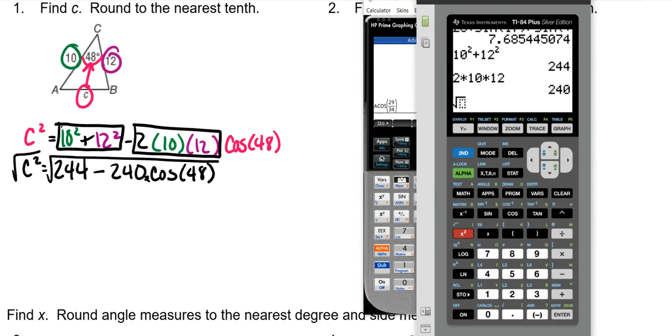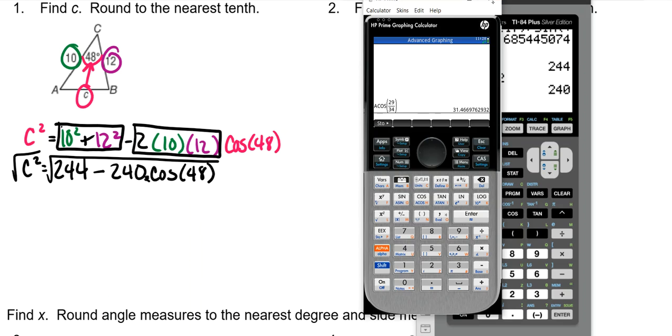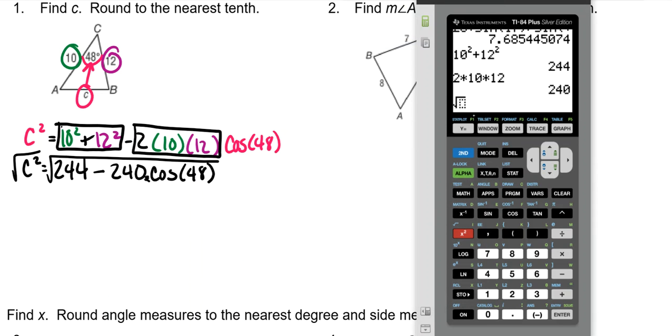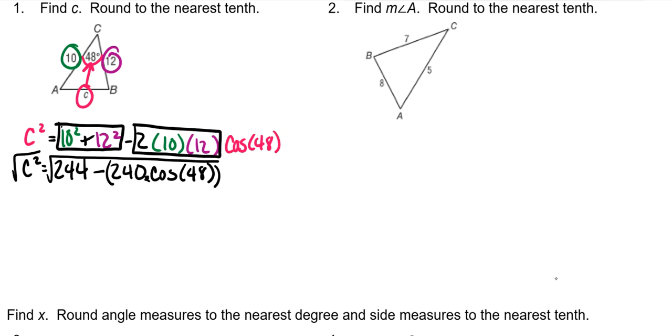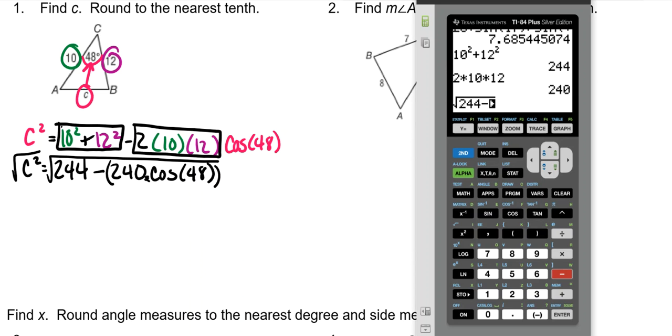So here we go. So square root of 244 minus. And then the last part. You might need parentheses for this last part like this. I'll do both of them, and we'll see if we need to. So 240 times the cosine of 48, and then two sets of parentheses. Enter. So 9.13 is for sure the correct answer.